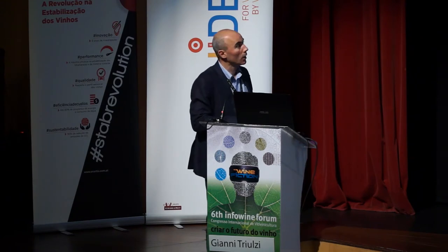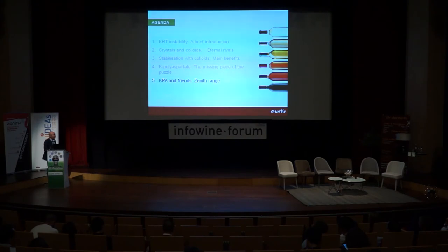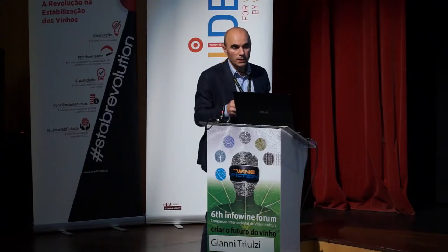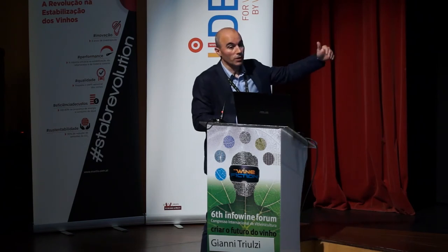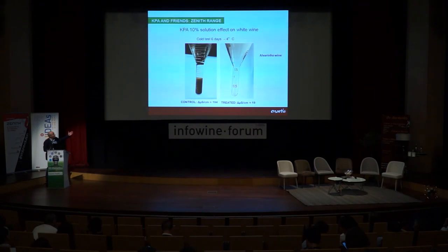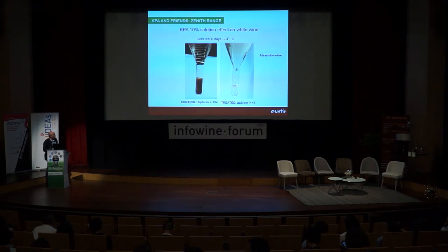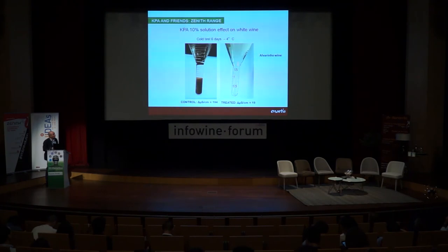I will show you two last examples of application of potassium polyaspartate. I'm going to talk about the Zenith range — a range of products developed during the last few years, all based on potassium polyaspartate. The heart of this product is potassium polyaspartate. Starting from the simplest application: Zenith Uno is a 10% solution of potassium polyaspartate. You can see here that starting from a white Albariño wine with a very high instability level — around 200 delta microsiemens — we achieve a perfectly stable wine. Potassium polyaspartate is very efficient.